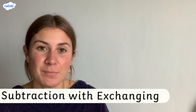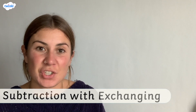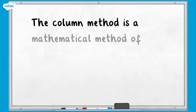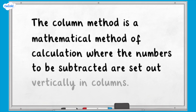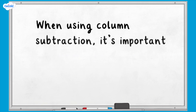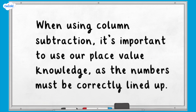Hi, this video is here to help you with using column subtraction for 5 and 6 digit numbers with exchanging. The column method is a mathematical method of calculation where the numbers to be subtracted are set out vertically in columns. When using column subtraction, it's important to use our place value knowledge as the numbers must be correctly lined up.